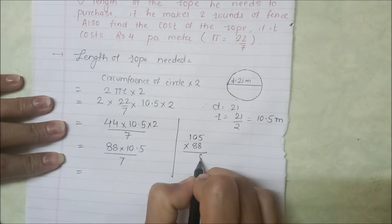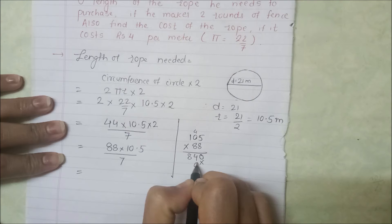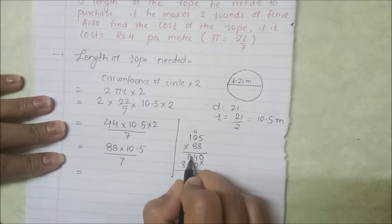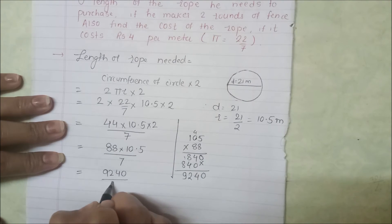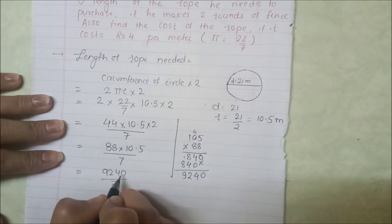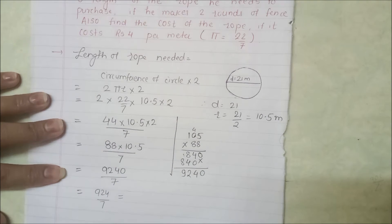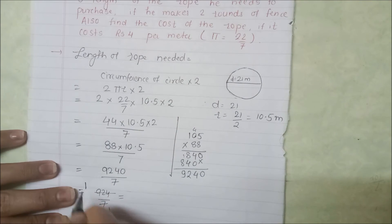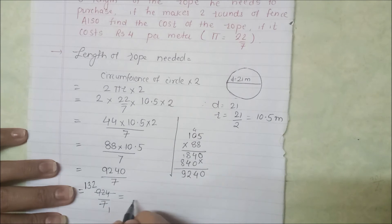88 × 105 की calculation: 8×5=40 carry 4; 8×0=0 +4=4; 8×1=8 → 840. फिर 80×105: 8×5=40 carry 4; 8×0=0+4=4; 8×1=8 → 8400. जोड़ने पर 9240। Point रखने पर 924.0, यानी 924। अब 924 ÷ 7 करते हैं: 7×1=7, 7×3=21 बचा 1, 14÷7=2 → 132।